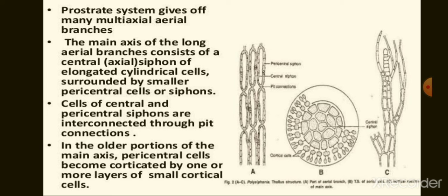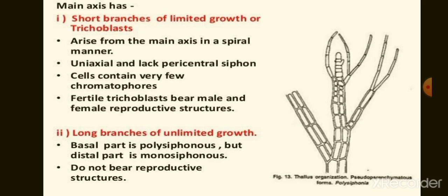The erect system consists of a main axis having long and short branches. Short branches bear male and female reproductive structures. The plant body is made up of many siphons. Each long branch and main axis consists of a central siphon made up of many elongated cells arranged one upon the other, surrounded by many pericentral siphons. Cells of the central and pericentral siphons are connected by cytoplasmic connections or pit connections. Short branches consist of cells arranged in a single row, are unisiphonous, and are called trichoblasts. The main axis has short branches of limited growth (trichoblasts) and long branches of unlimited growth.